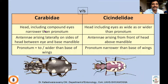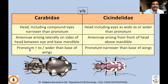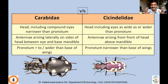To summarize how to differentiate Carabidae and Cicindelidae: In Carabidae, head including compound eyes is narrower than the pronotum; in Cicindelidae, head including eyes is as wide as or wider than the pronotum. In Carabidae antennae arise laterally on the sides of the head; in Cicindelidae they arise from the front of the head above the mandibles. In Carabidae the pronotum is equal to or wider than the base of the wings; in Cicindelidae the pronotum is narrower than the base of the wings.